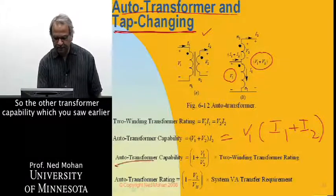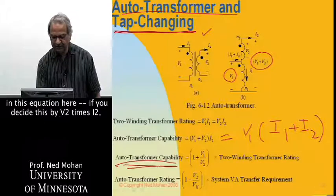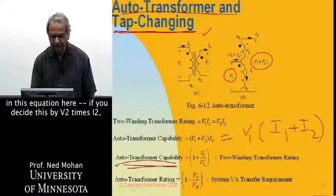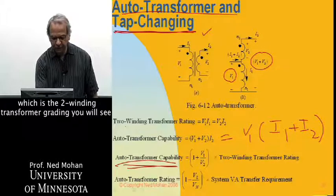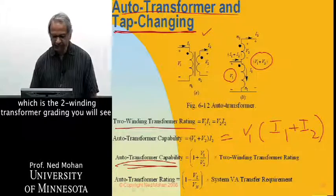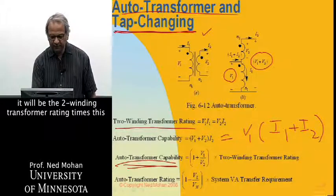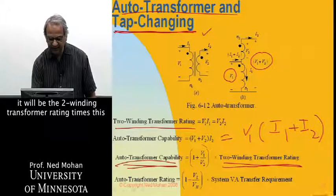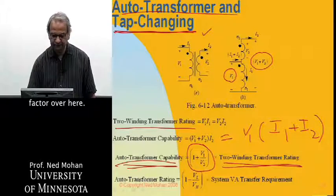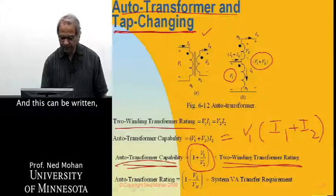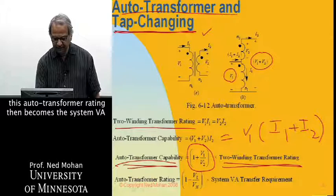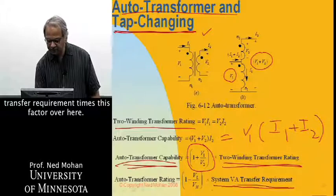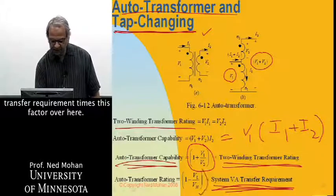So the autotransformer capability, which you saw earlier in this equation here, if you divide this by V2 times I2, which is the two-winding transformer rating, you will see that it'll be that two-winding transformer rating times this factor over here. And this can be written, this autotransformer rating then becomes the system VA transfer requirement times this factor over here.